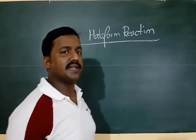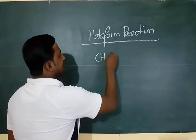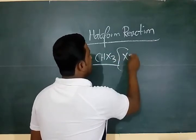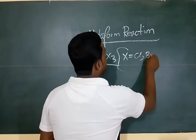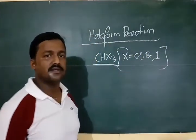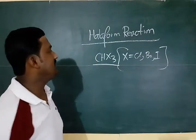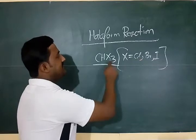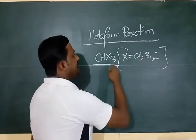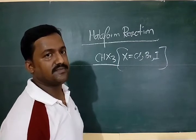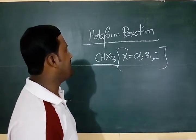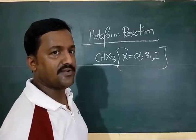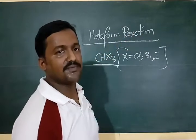Haloforms - what are the haloforms? CHX3, these compounds where X can be chlorine, it can be bromine, it can also be iodine, but not fluorine. Fluoroform is not formed. If it is Cl then the compound is chloroform, if it is Br the compound is bromoform, and if it is I the compound is iodoform. So the reactions by which we can prepare these compounds - CHCl3, CHBr3, and CHI3 - chloroform, bromoform and iodoform, the reaction is said to be haloform reaction.